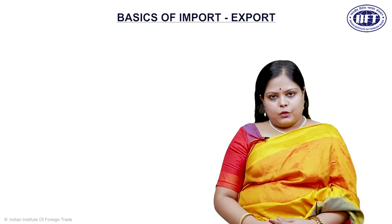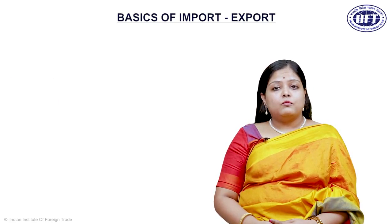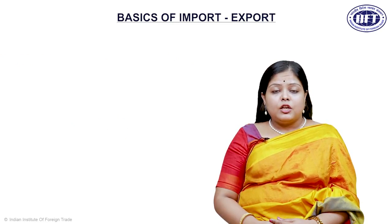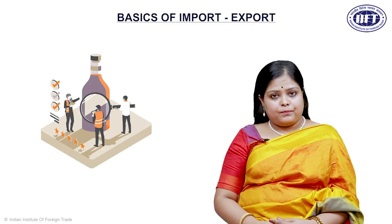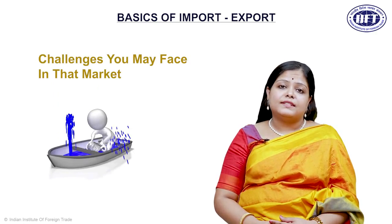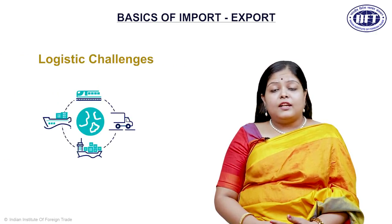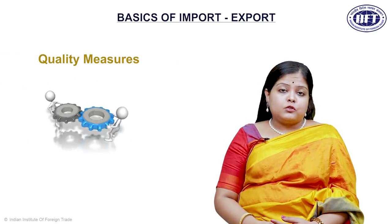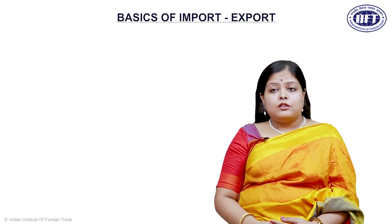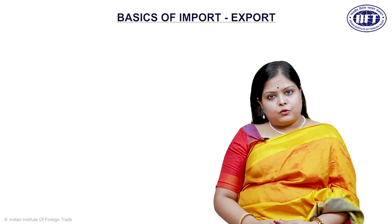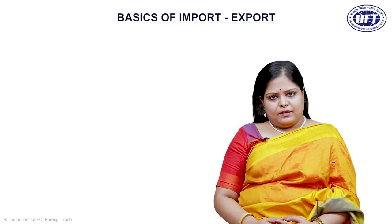When you are planning for an export, the first and foremost thing is to find out the right market. Once you have identified the right market, you check if your product is apt for that market. Then you look for challenges you may face — for example, logistic challenges, documentation issues, or quality measures that may be difficult to meet — and whether you need any certification or other methods to overcome those barriers. These stages are very crucial and basic for any export plan.